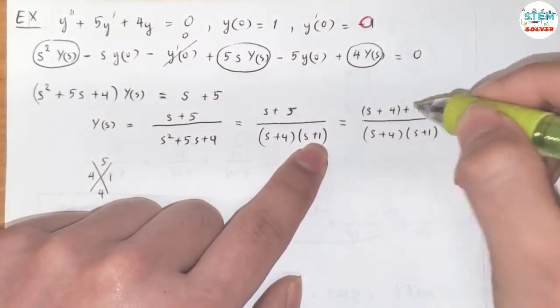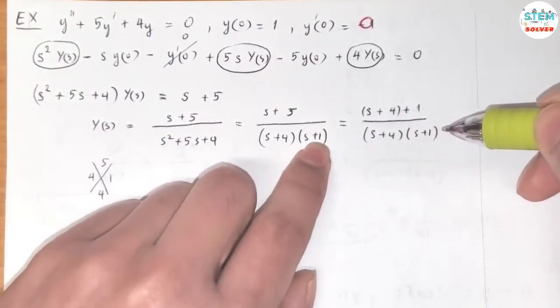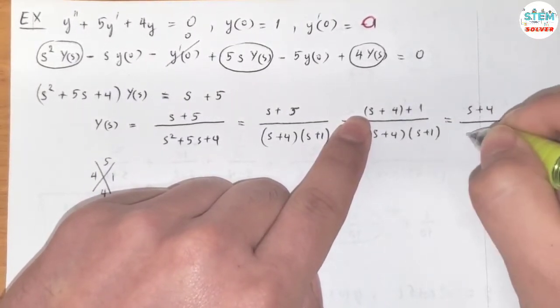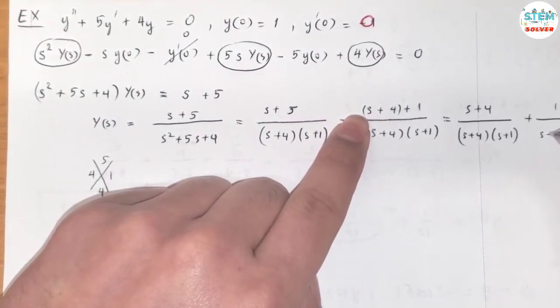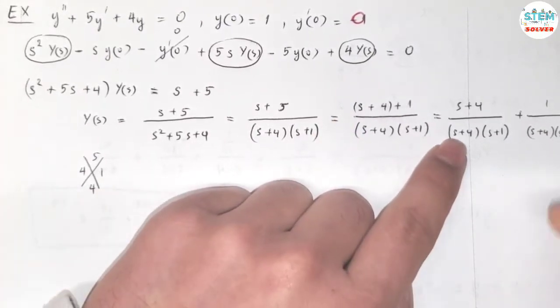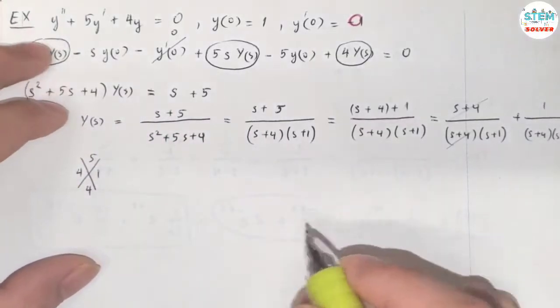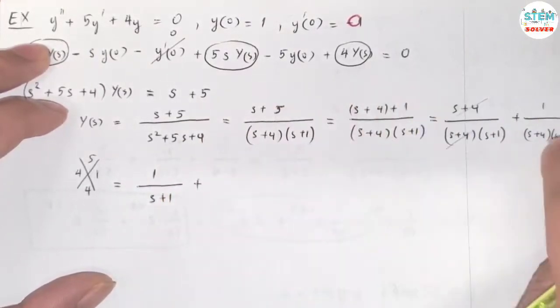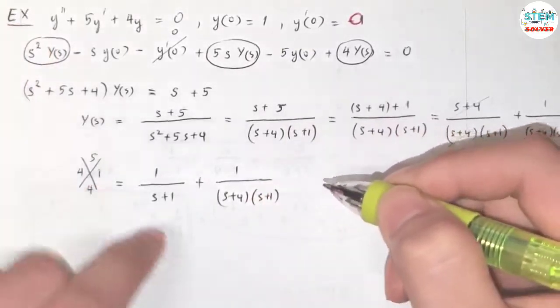Now I'm going to group this together, and because we have addition on top, I'm going to write it down into two fractions: (s + 4) over (s + 4)(s + 1), plus 1 over (s + 4)(s + 1). For this one, cancel this out, then I'm left with 1 over (s + 1). For this one, just rewrite it.